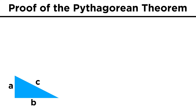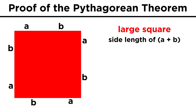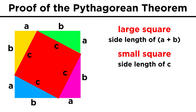Let's say we draw a right triangle like this one, and label the sides A, B, and C, like we are used to. Now let's make three more copies of this triangle, and arrange them like this so that we get two squares. The larger square has a side length of A plus B, while the smaller inner square has a side length of C.